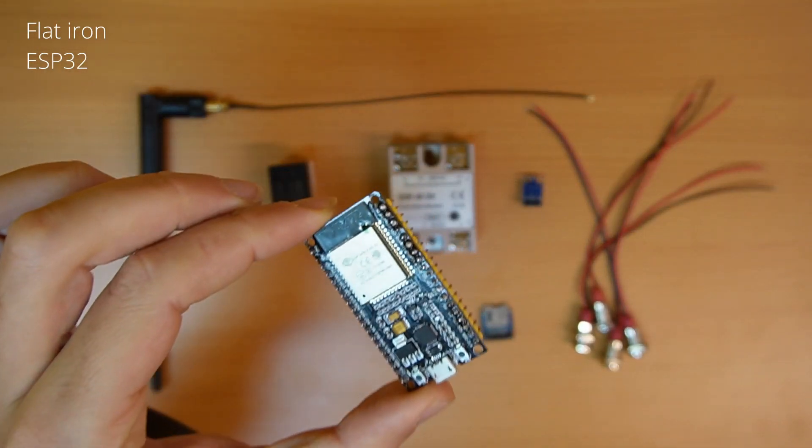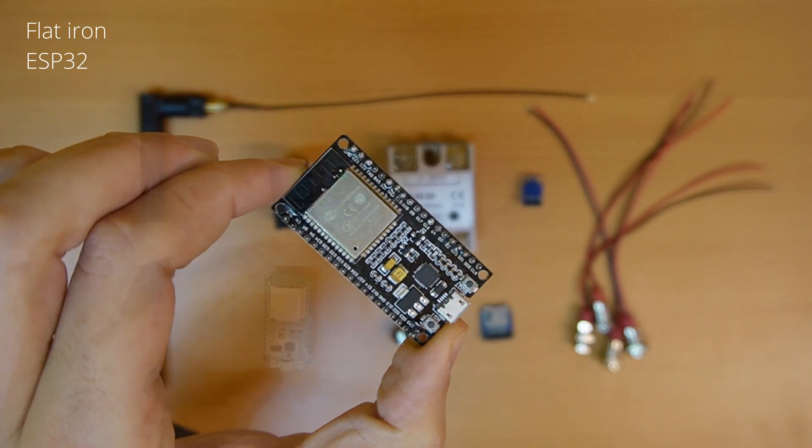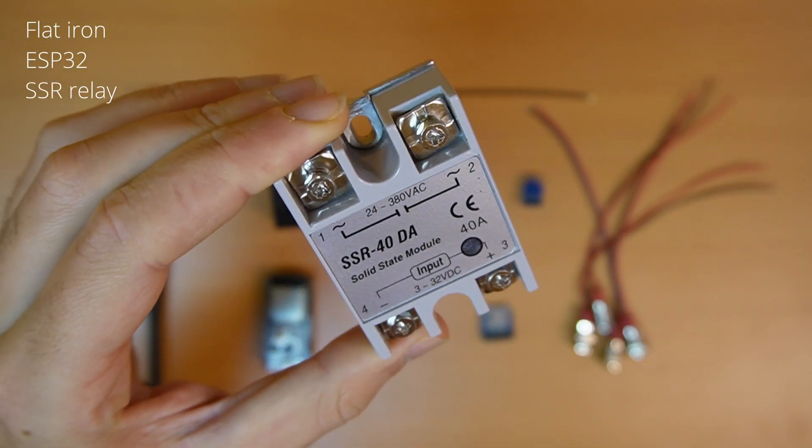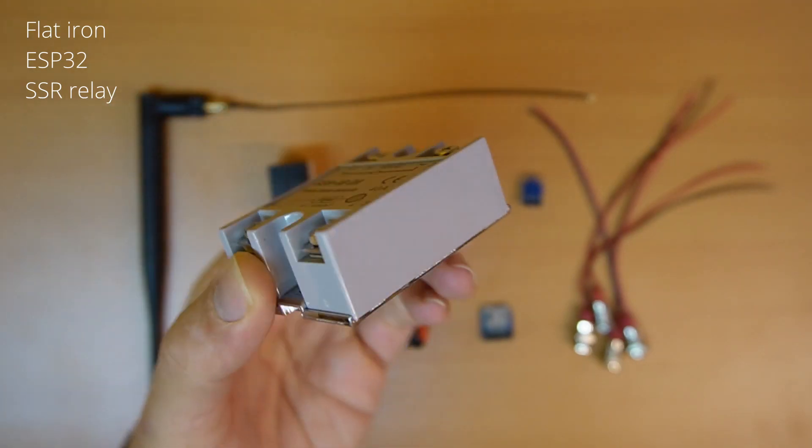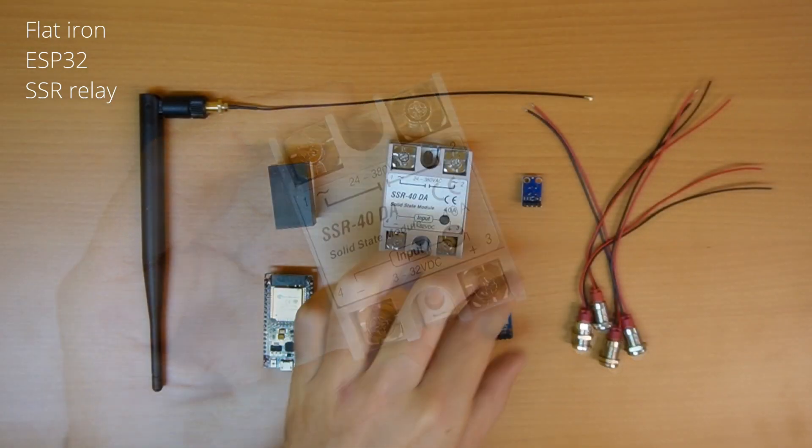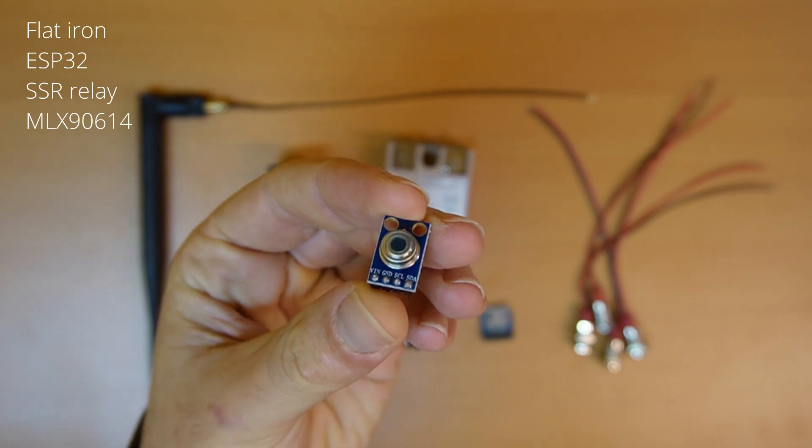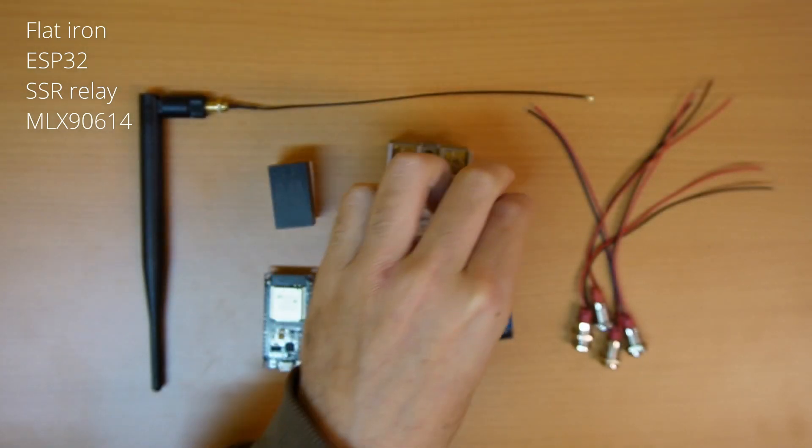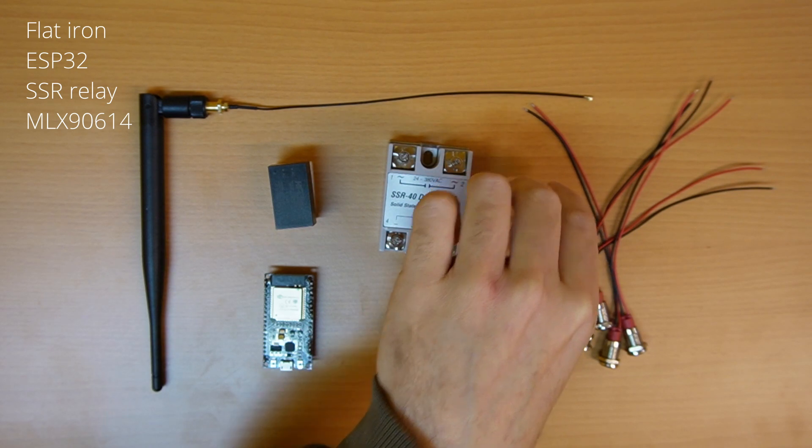An ESP32 based microcontroller, a solid state relay able to be triggered by the 3 volts of the microcontroller and supporting the max power of the iron, an infrared temperature sensor - I selected the MLX90614, able to handle temperatures up to 300 Celsius degrees.